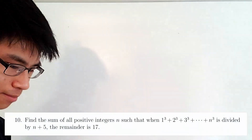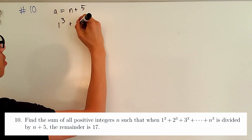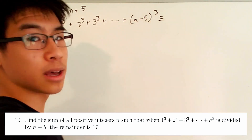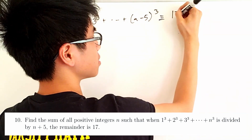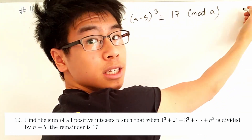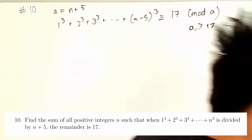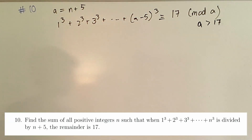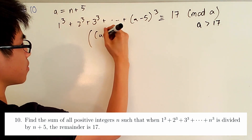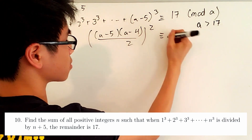Number ten. Let a equal n equals 5. We have 1³ + 2³ + 3³ + ... + (a−5)³ congruent to 17 mod a, and a must be greater than 17 so that the actual remainder is 17. It's a well-known fact that the sum of the first (a−5) cubes equals [(a−5)(a−4)/2]², and this must be congruent to 17 mod a.